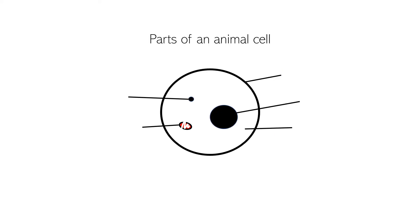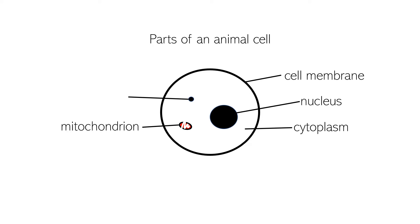These are the parts of an animal cell: the cell membrane, nucleus, cytoplasm, and mitochondrion. We also include the ribosome.